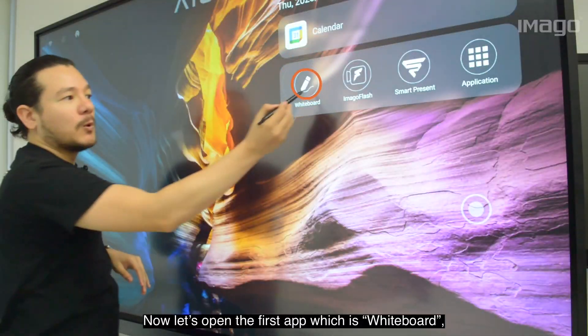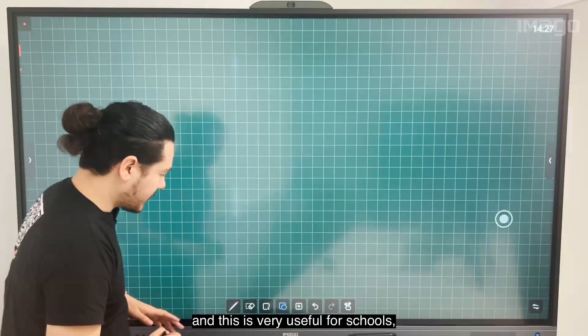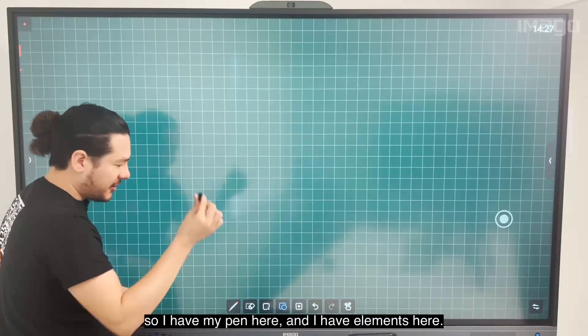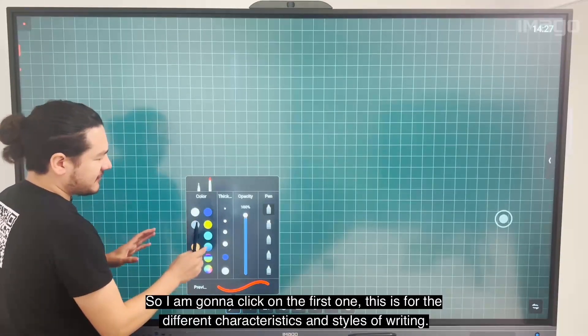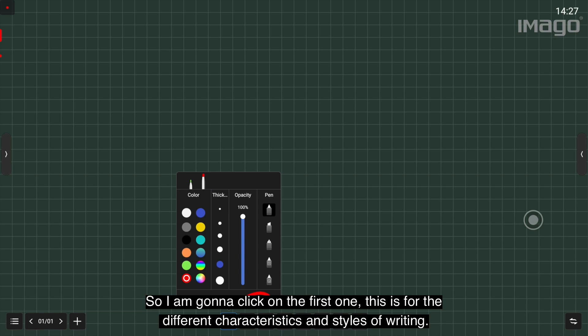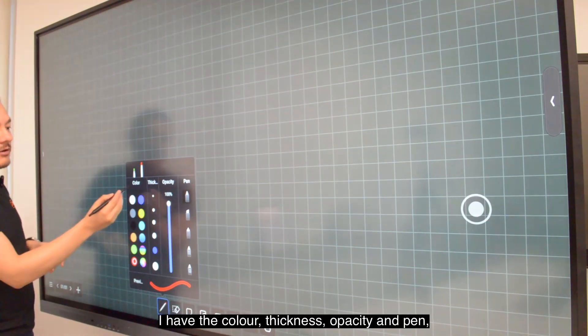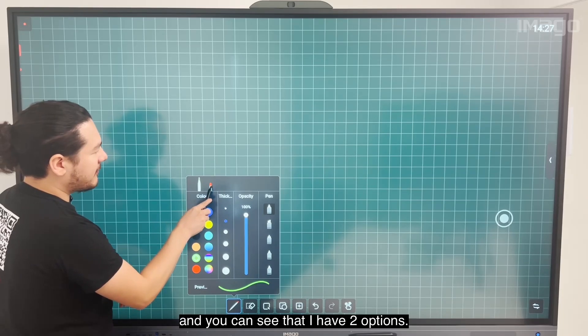Now let's open the first app which is Whiteboard, very useful for schools. I have my pen here and elements. I'm going to click the first one, which is for different characteristics and styles of writing. I have the color, thickness, opacity, and pen options. You can see here I have two options: the first one is the bottom of the pen and the other one is the top.